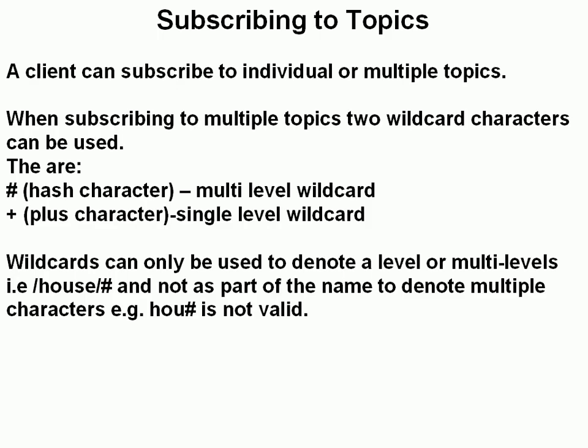A client can subscribe to individual or multiple topics. When subscribing to multiple topics, you can use two wildcard characters: the hash character '#', which is a multi-level wildcard, and the plus character '+', which is a single-level wildcard. Wildcards can only be used to denote a level or multiple levels. For example, 'house/#' subscribes you to all topics under 'house/'. However, 'HOU#' is not valid because it has no level separator — it does not subscribe you to all topics starting with the letters 'HOU'.